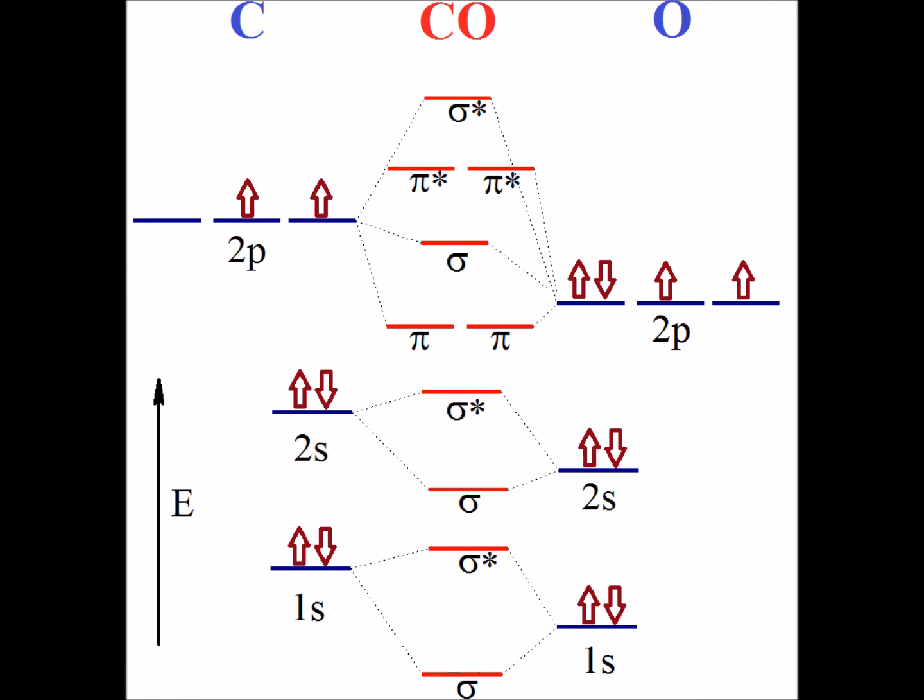For the carbon monoxide molecule, we have a total of 14 electrons.